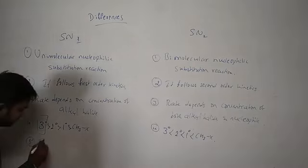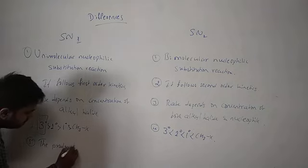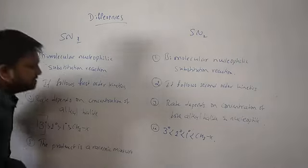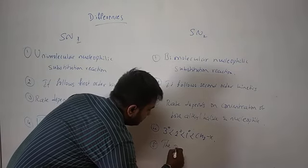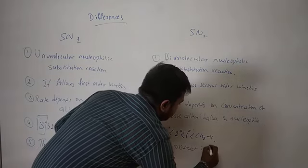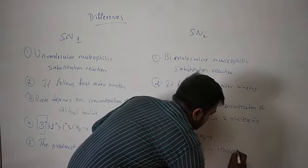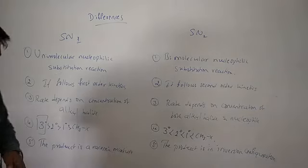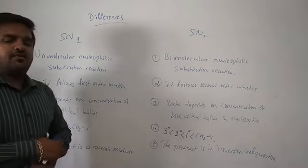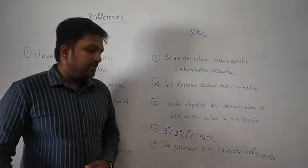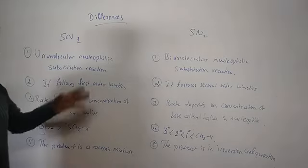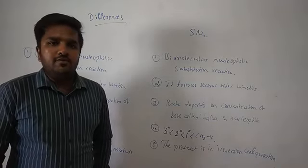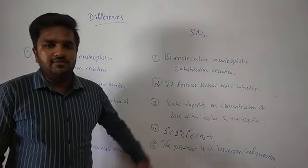Fifth difference: the product in SN1 is a racemic mixture — a combination of two equal enantiomers — whereas in SN2 the product has inversion of configuration, meaning only the configuration is inverted. These are the five differences between SN1 and SN2 mechanism. Both mechanisms and their differences are very important from the board examination. Thank you, students.